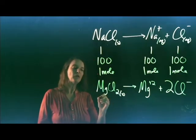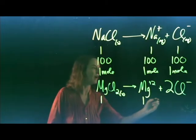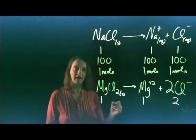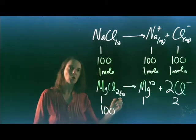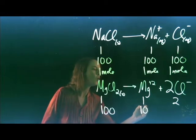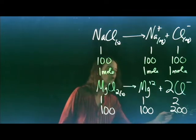So if we had one magnesium chloride unit, we would generate one magnesium ion and two chloride ions. If we had 100 magnesium chloride units, we would generate 100 magnesium ions and 200 chloride ions.